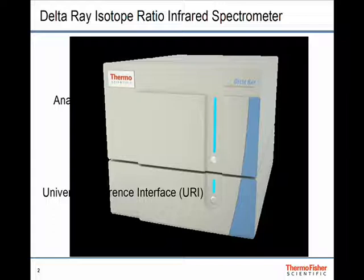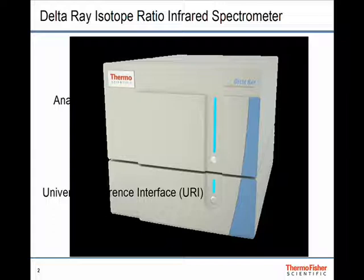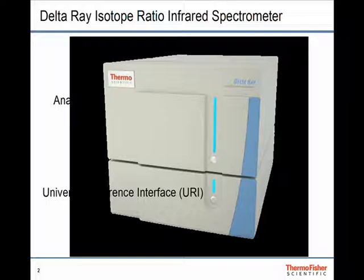So I'm going to talk about the delta-ray isotope ratio infrared spectrometer. It consists essentially of two parts, the analyzer and the universal reference interface. In the first part of the presentation I will talk to you about how it actually works, if you haven't heard about that yet. And then I'll talk about what the universal reference interface adds in terms of performance before diving into the applications that probably interest you most.